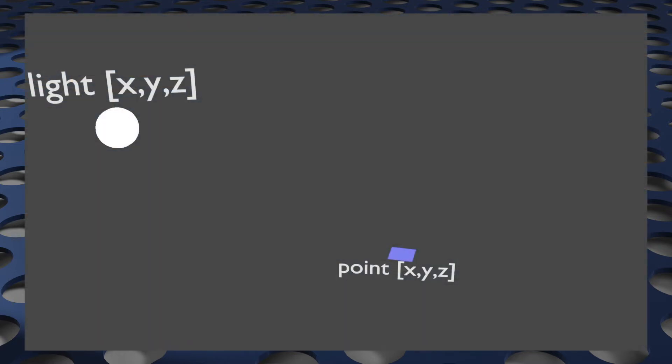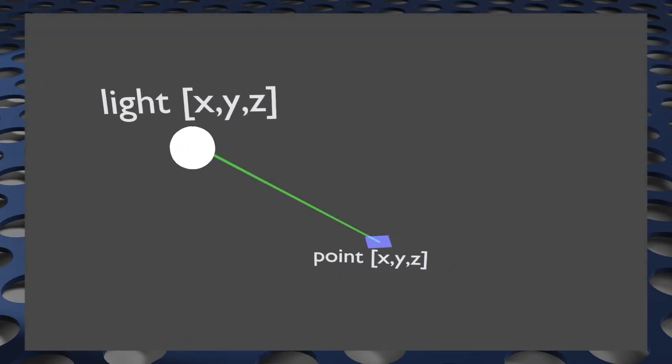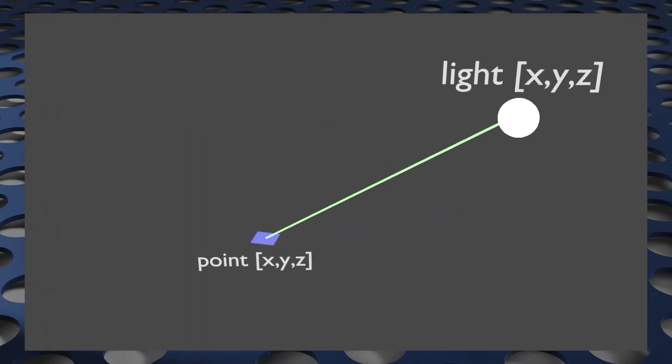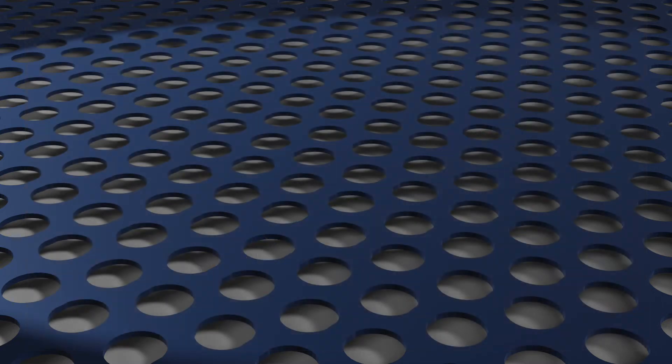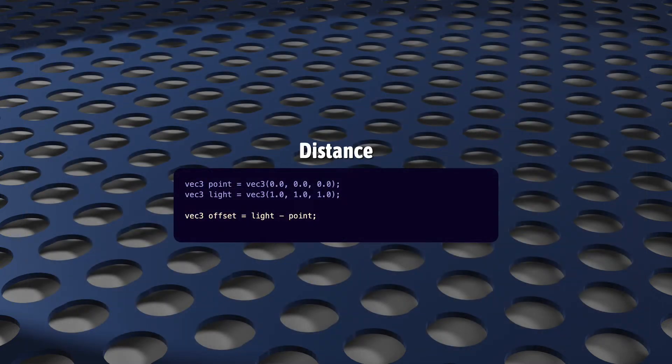First, we calculate the 3D offset between these two points. Basically, the vector that points from our surface point to the light source. It's just a simple calculation. It's the light vec3 minus the surface point vec3. Next, to calculate the distance, we just measure the length of this vector. We'll use GLSL's length function for this.